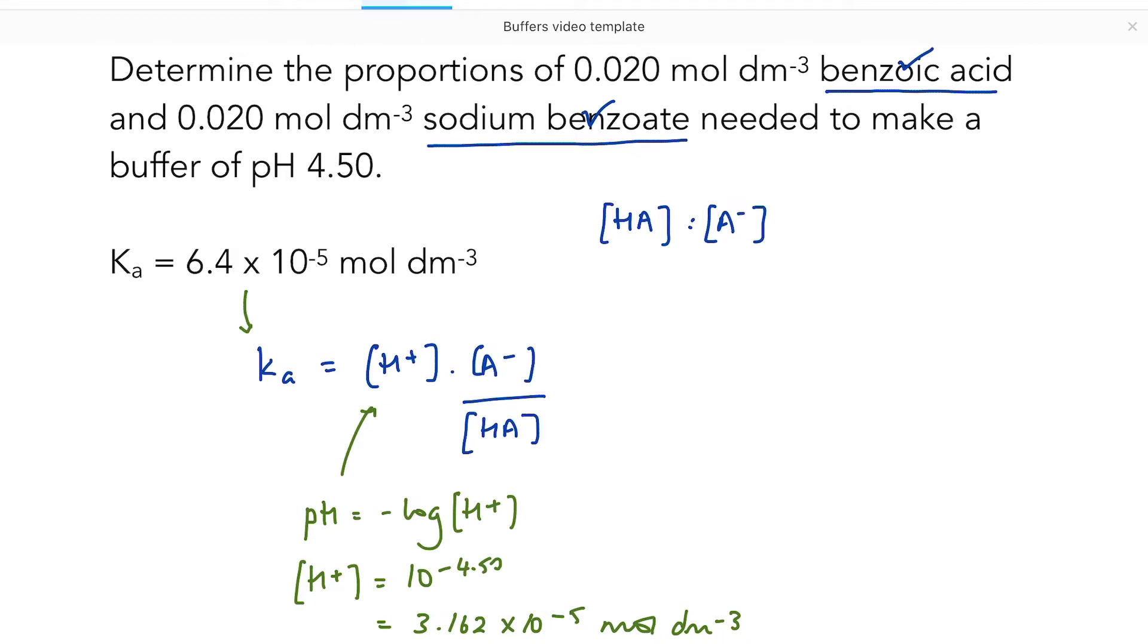Now, the way that I have this written, I actually have my ratio as A- to HA, i.e. salt to acid, not as the question asks as acid to salt.